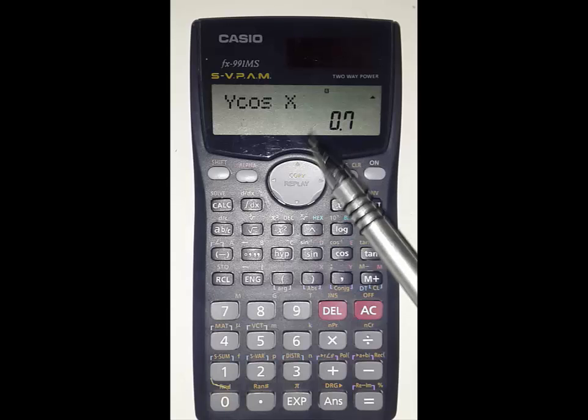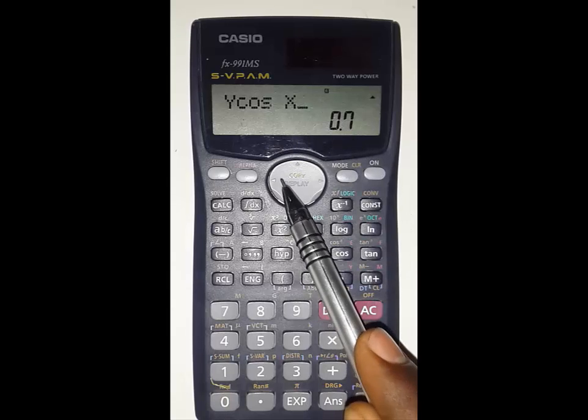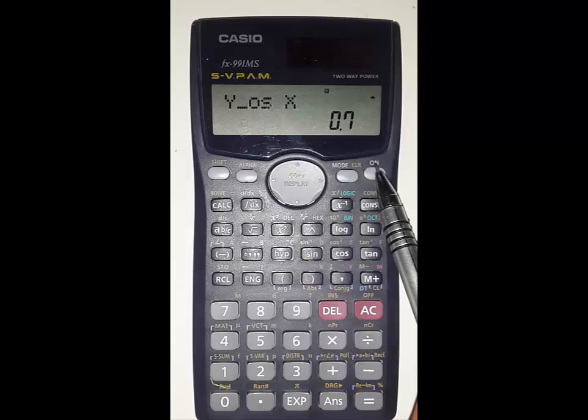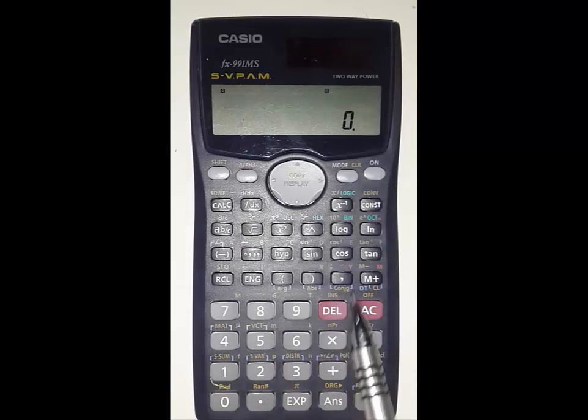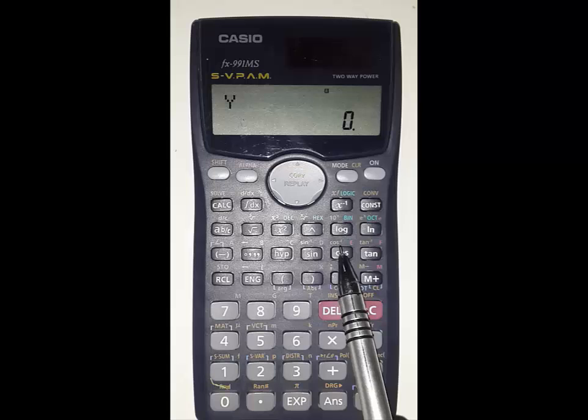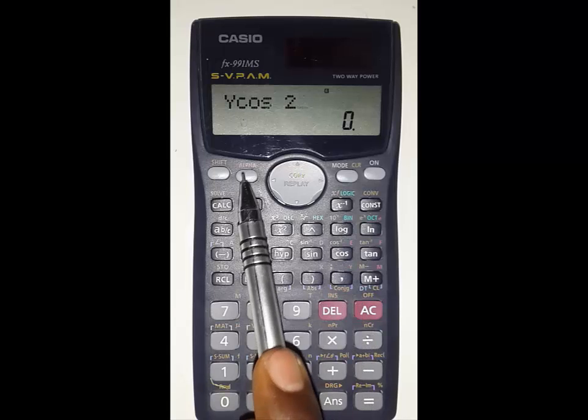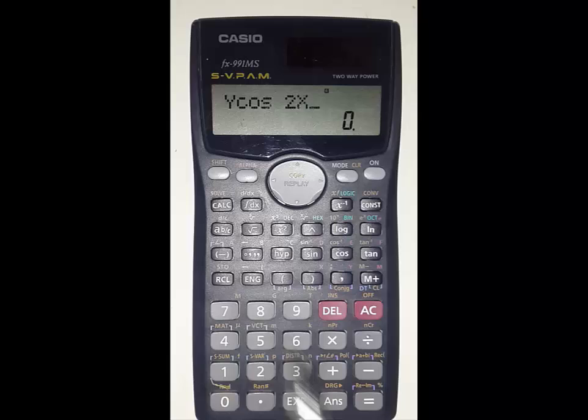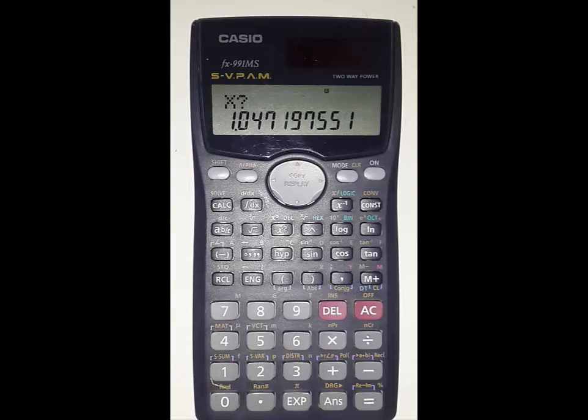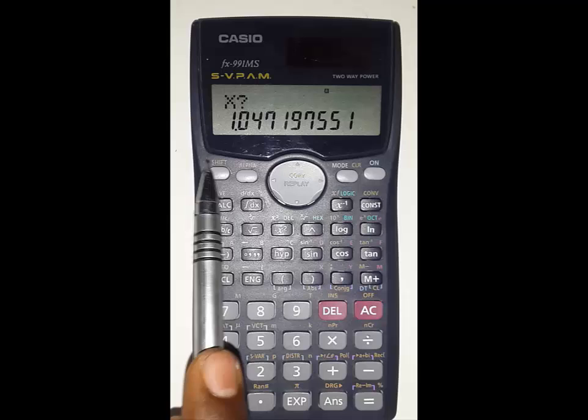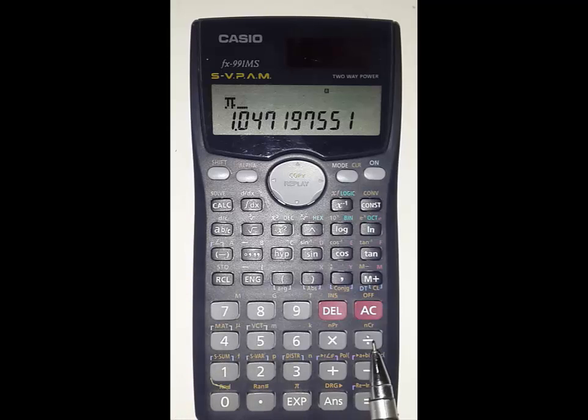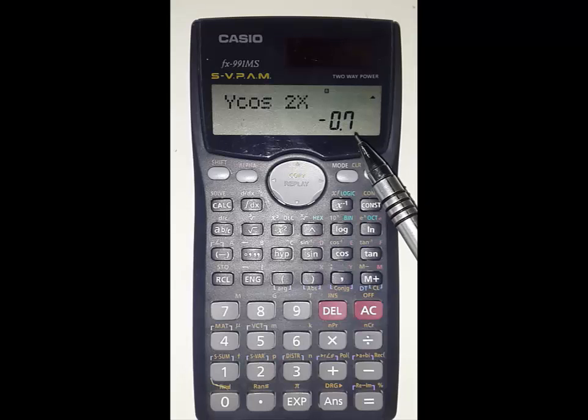Suppose if you want to calculate Y cos 2x. Alpha Y, cos 2, alpha X. Just press calc. It is asking for Y value. Press Y 1.4, equal to. Asking for X value. X value is pi by 3. Pi divided by 3. This is our Y cos 2x.